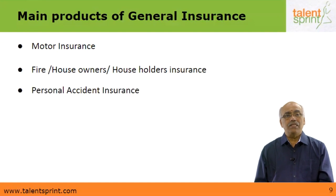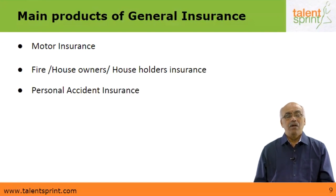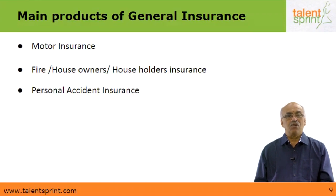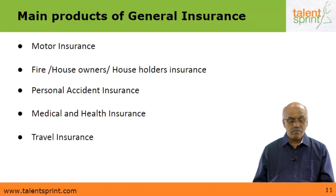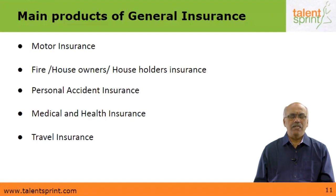Then you have personal accident insurance, which covers when the insured person is injured or their limbs are lost in an accident. General insurance policies also cover medical and health insurance. A newer type of insurance — introduced in the last 15 to 20 years or so — is called travel insurance, which provides for unforeseen damages during travel.